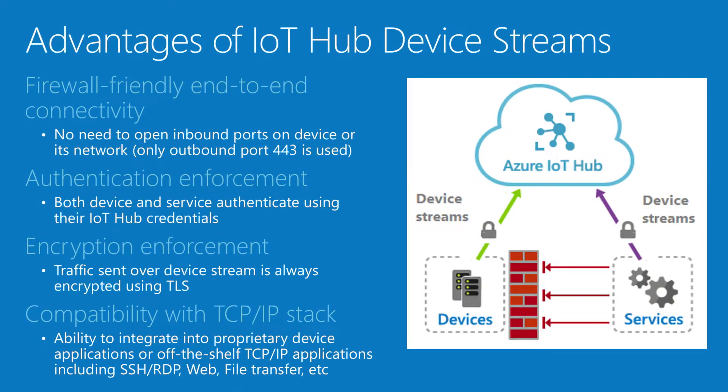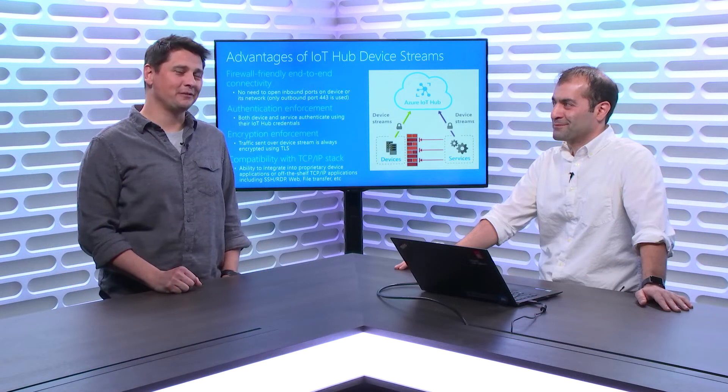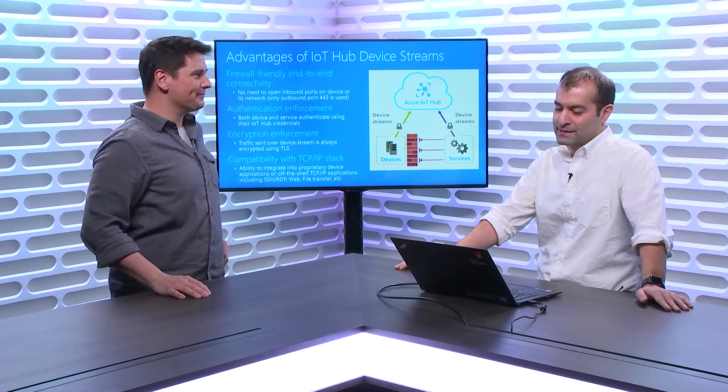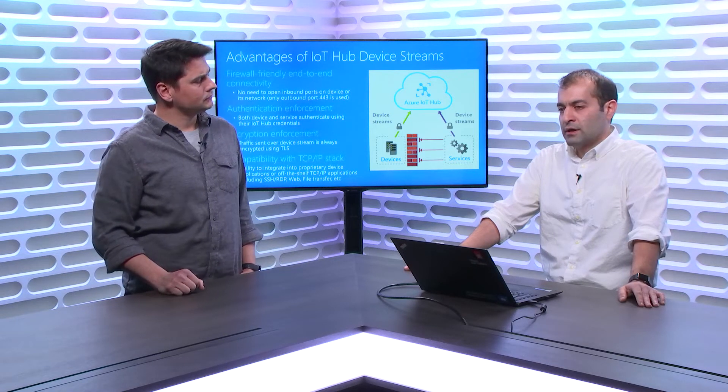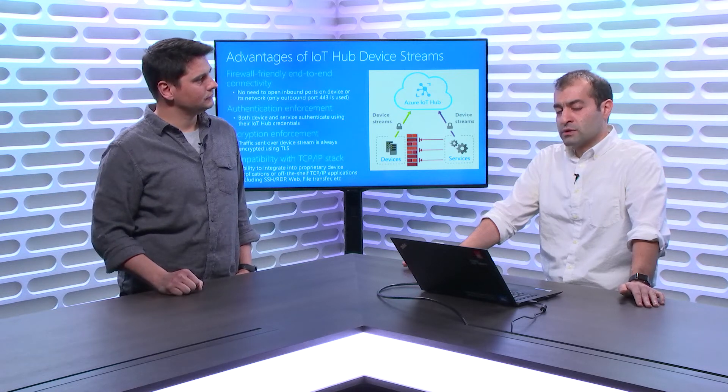Device Streams is compatible with the TCP/IP stack. Any client-server application that uses TCP/IP can tunnel its traffic through Device Streams. That includes SSH, remote desktop, as well as standards-based applications like HTTP and HTTPS. However, this is not only restricted to these applications — they are among the most commonly demanded scenarios, but it's still just the tip of the iceberg. Customers can develop their own applications and use Device Streams as well.